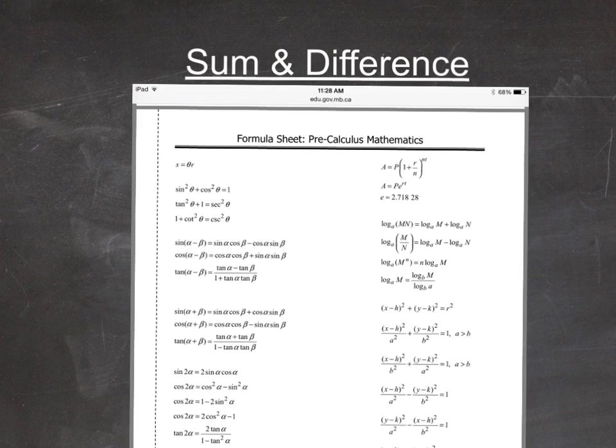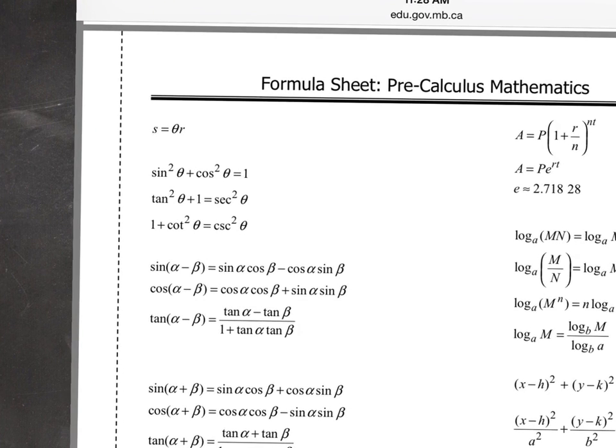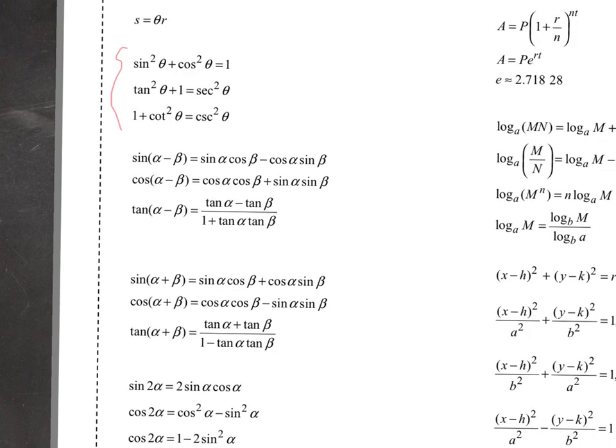So looking at the top here, I can see that I have these three main trig identities that I just talked about on the last slide. So the sum and difference identities are going to be these ones here. So these six identities here.